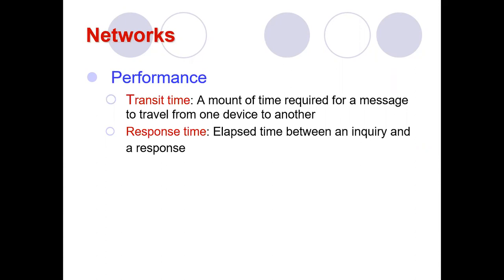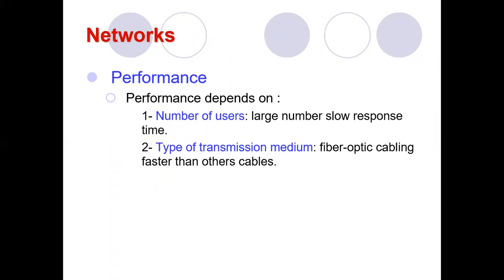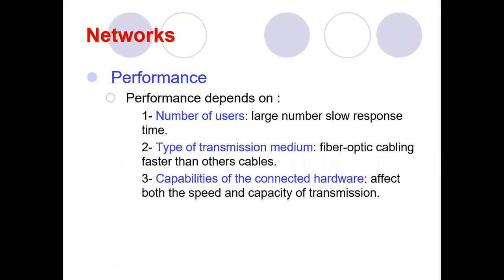Performance is measured by transit time and response time, but it also depends on the number of users. For example, if our college has 100 Mbps bandwidth, it works fine for 50 to 100 computers simultaneously. But if 500 people use the same 100 Mbps capacity, it may crash or cause errors — more users means slower response time.